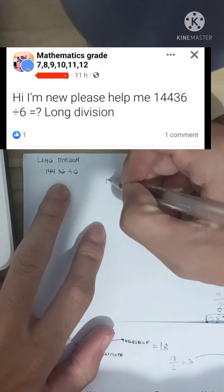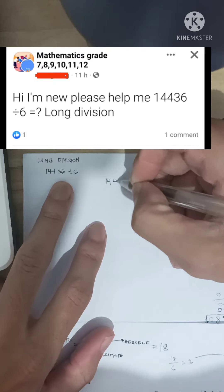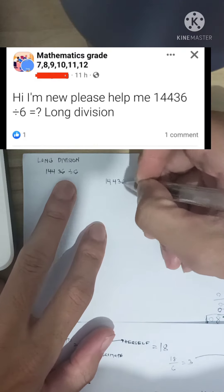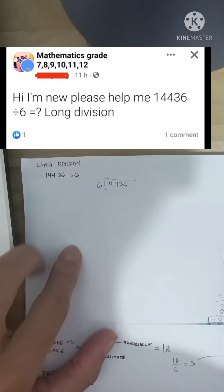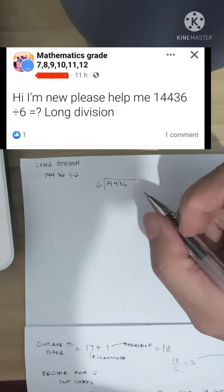So, long division. First, we have to write the given. So, 14,036 divided by 6. And then, how will we perform the division?